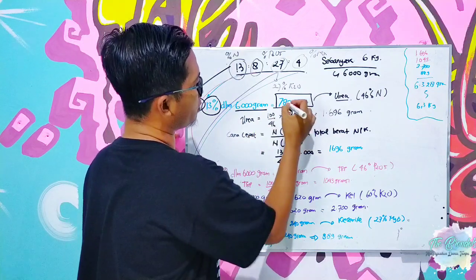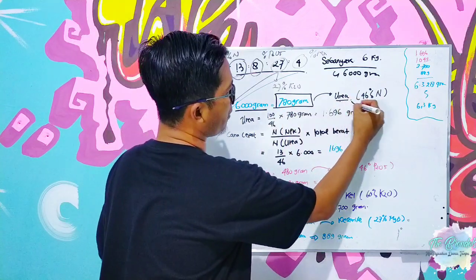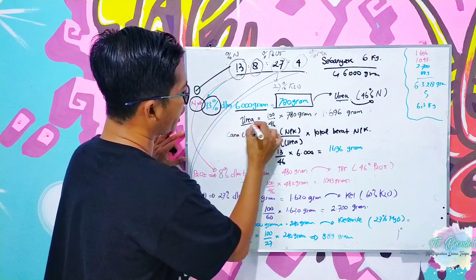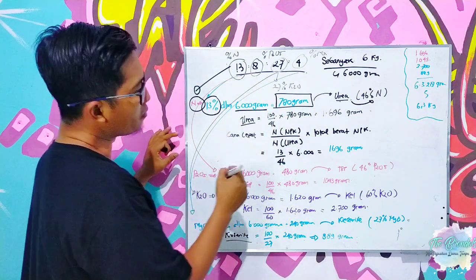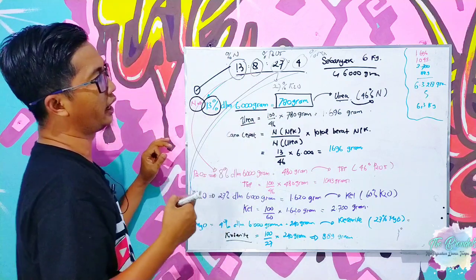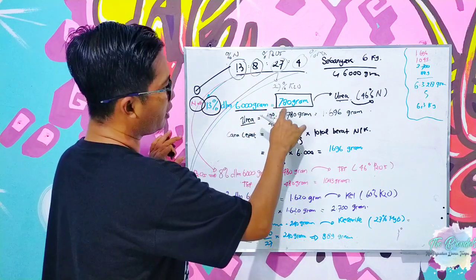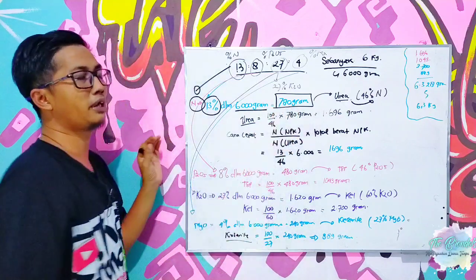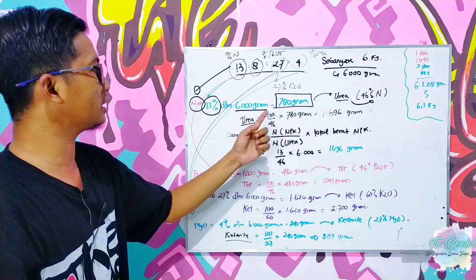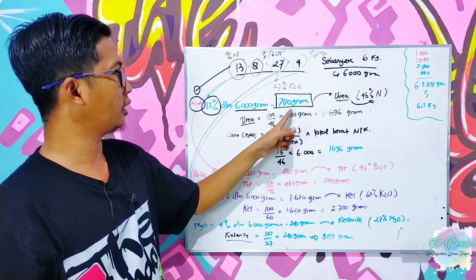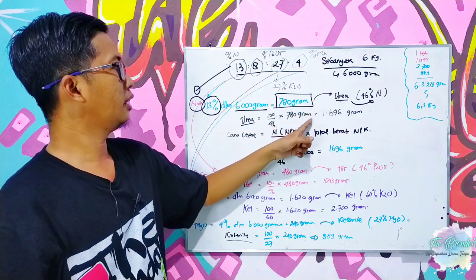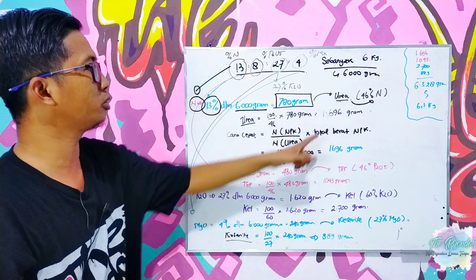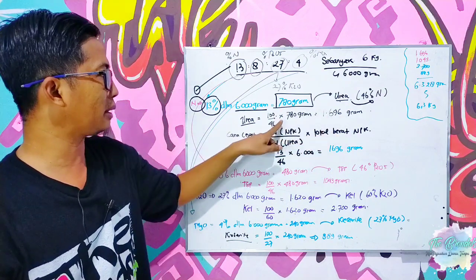780 gram ketika kita mau substitusi atau sumber nitrogennya ini kita menggunakan urea yang 46 persen, maka perhitungannya adalah ureanya 100 per 46, karena bahwa perhitungannya harus perhitungan terbalik. Karena bahwa kita pengennya mendapatkan nitrogen 780 gram dari urea yang 46 persen, maka 100 dibagi 46 dikalikan 780 gram, maka sebagai apa, urea yang kita butuhkan adalah 1696. Kalau ini dikalikan 46 persen maka akan ketemu 780 gram.